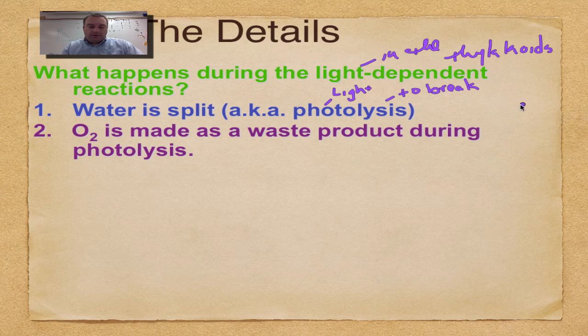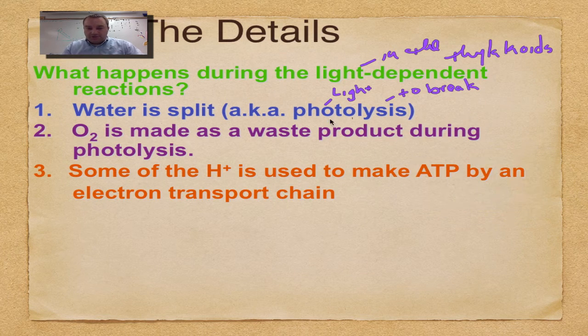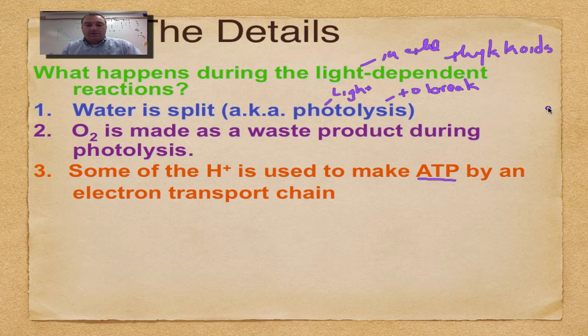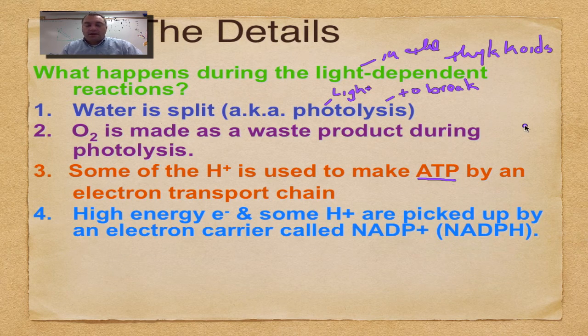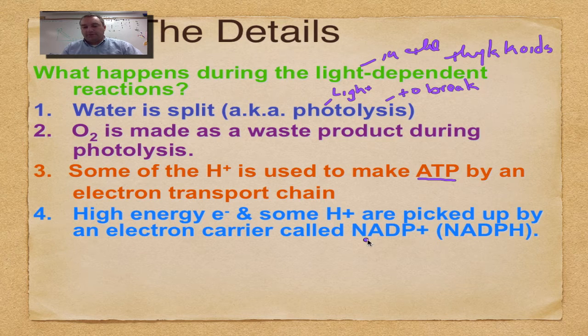Oxygen is made as a waste product during photolysis. Some of the hydrogen is used to make ATP—remember, ATP is an energy transfer molecule—and that's done by an electron transport chain, which we'll learn about in more detail in Chapter 9. High-energy electrons come from when the magnesium popped off an electron, and some of the hydrogens are picked up by an electron carrier called NADP+.